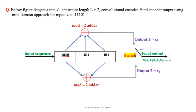The figure below depicts a rate 1/2, constraint length 2 convolutional encoder. Find the encoder output in the time domain approach for the input bit stream: 1, 1, 1, 0, 1. This is a convolutional encoder of constraint length 2, where L equals 2.